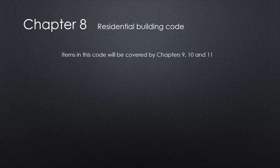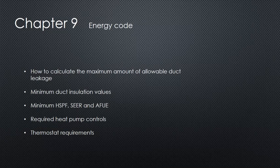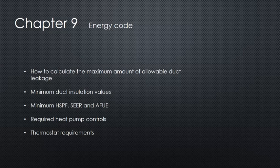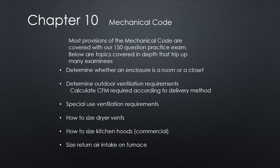Questions arising from the residential code will be addressed in our discussion of the mechanical, fuel gas, and energy codes. The energy code is a massive code that tackles every building component that affects energy usage. This chapter picks and chooses only those provisions that relate to the HVAC system. The guide has condensed the energy code to only a few pages, making it easy for you to simply memorize what you need to know for the exam.